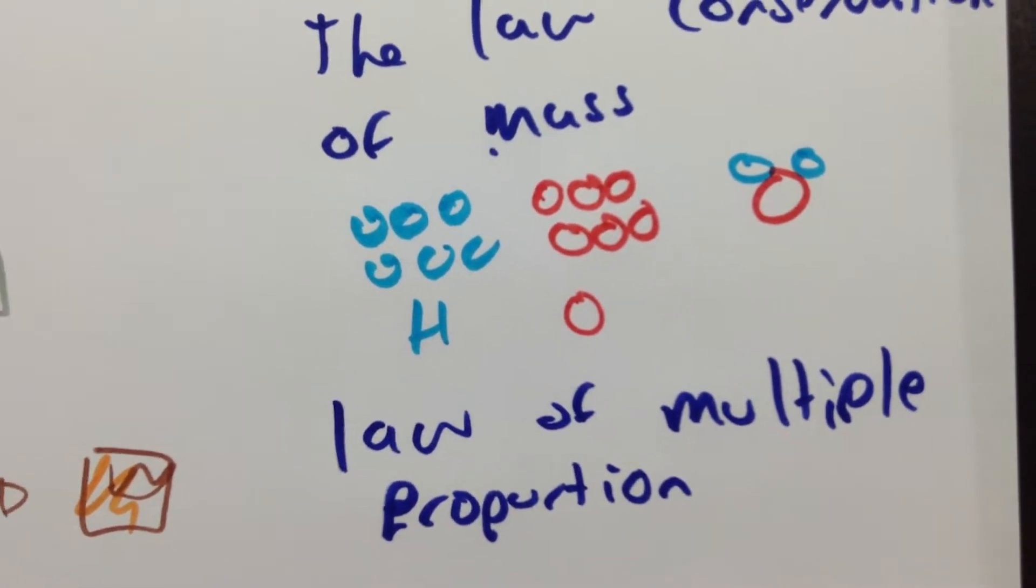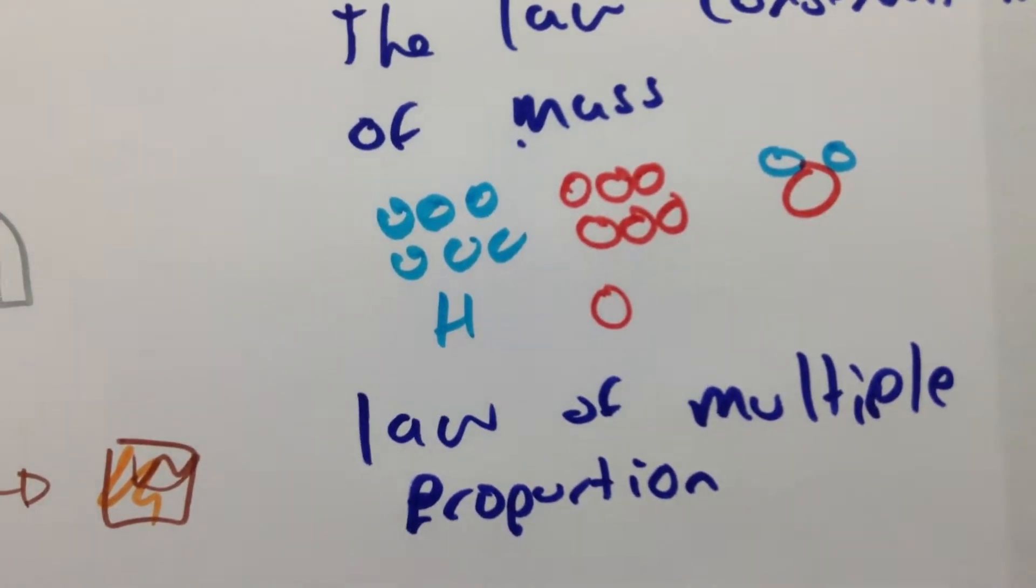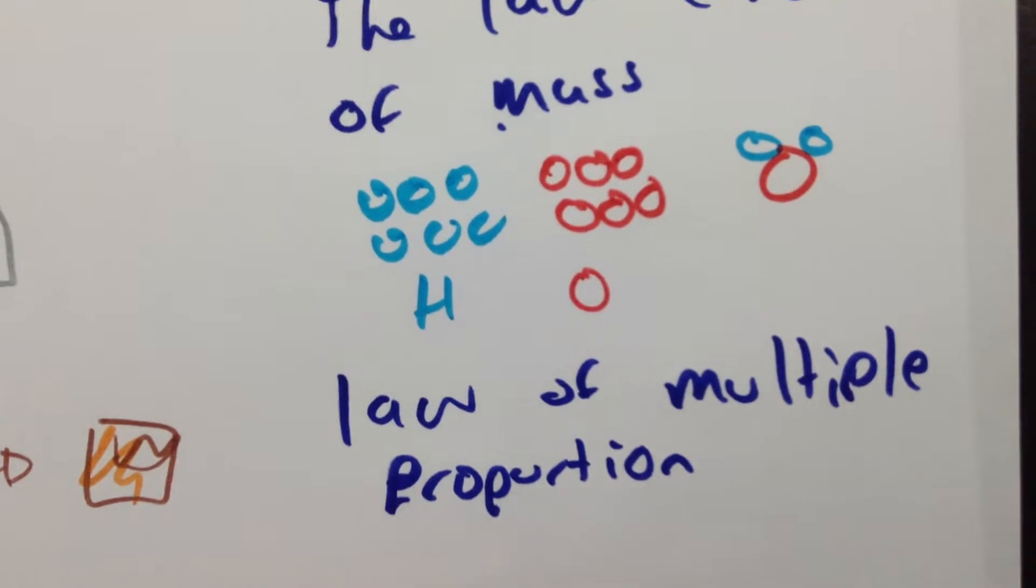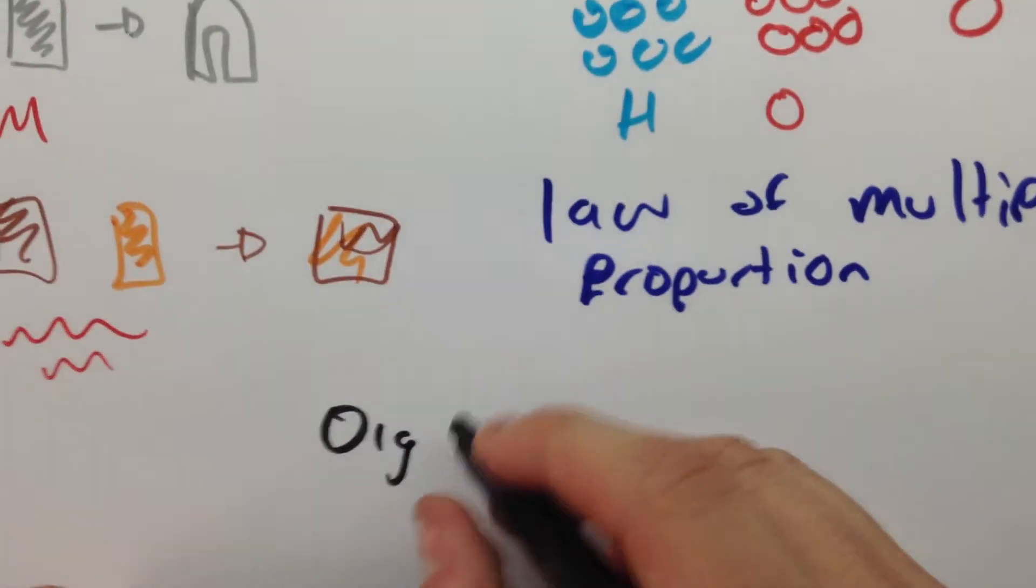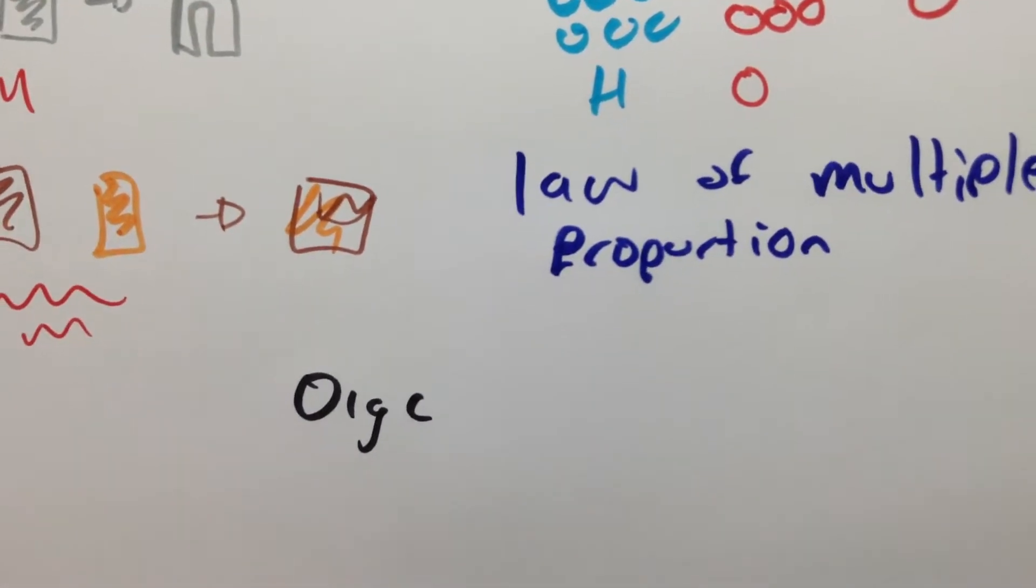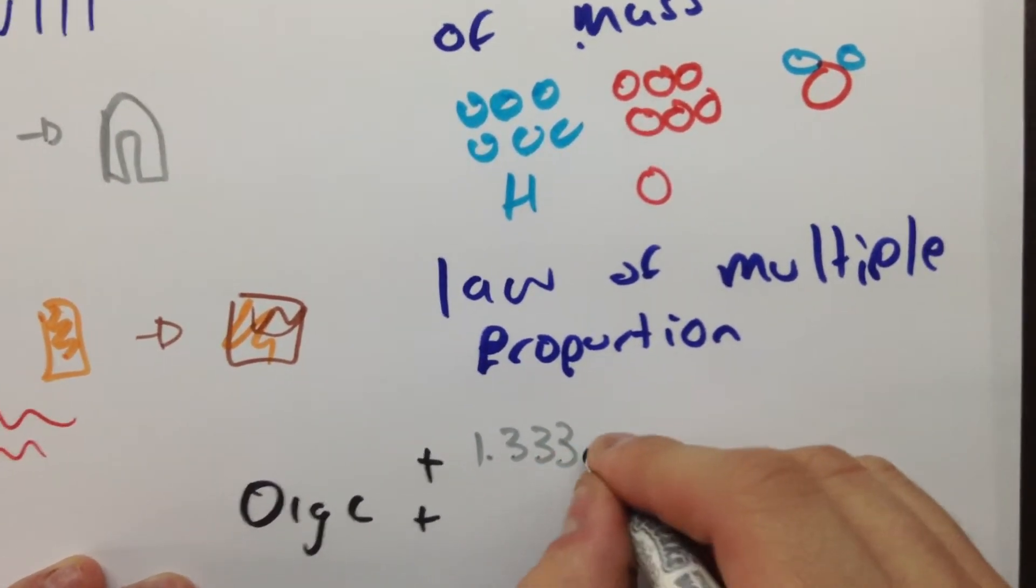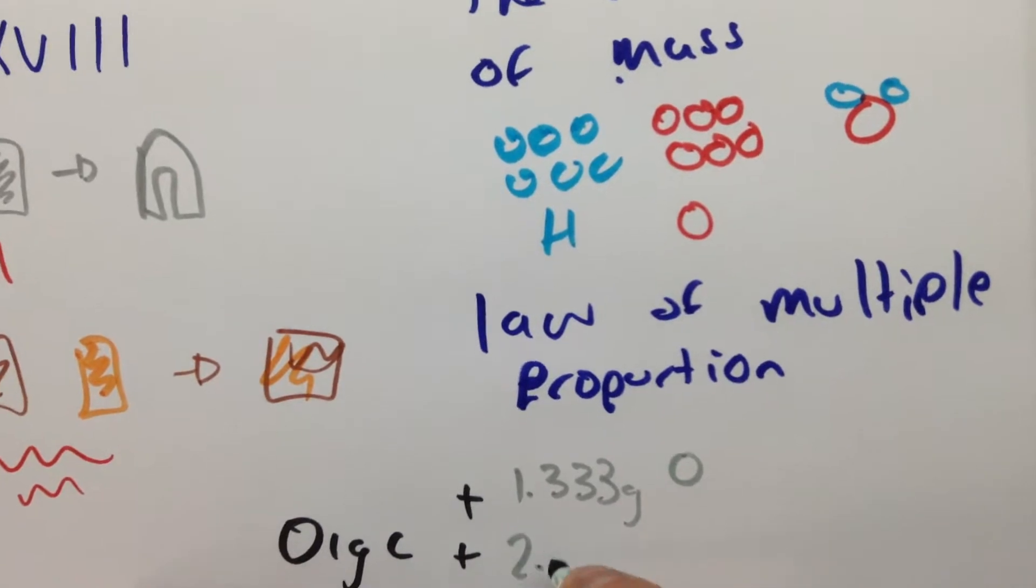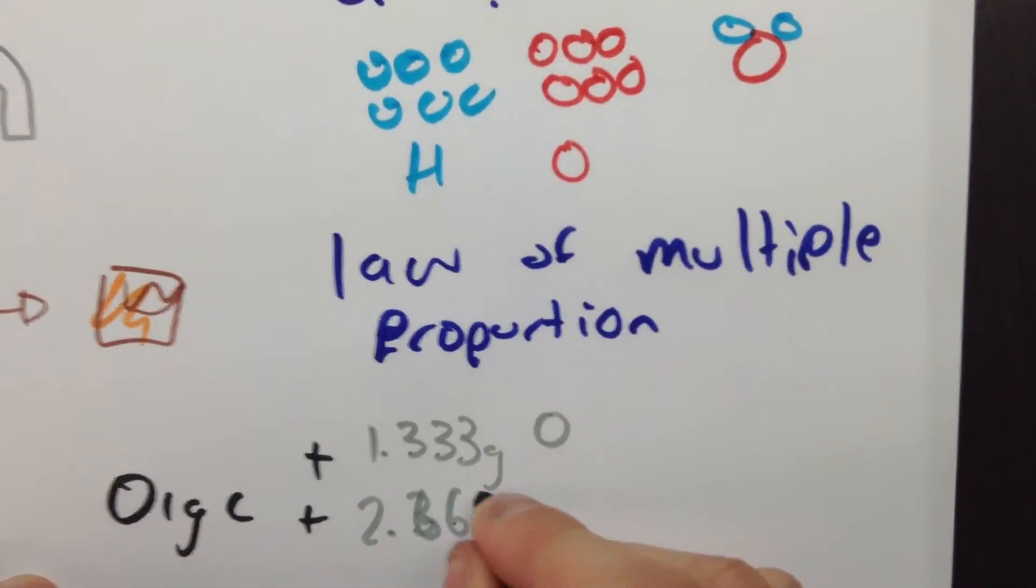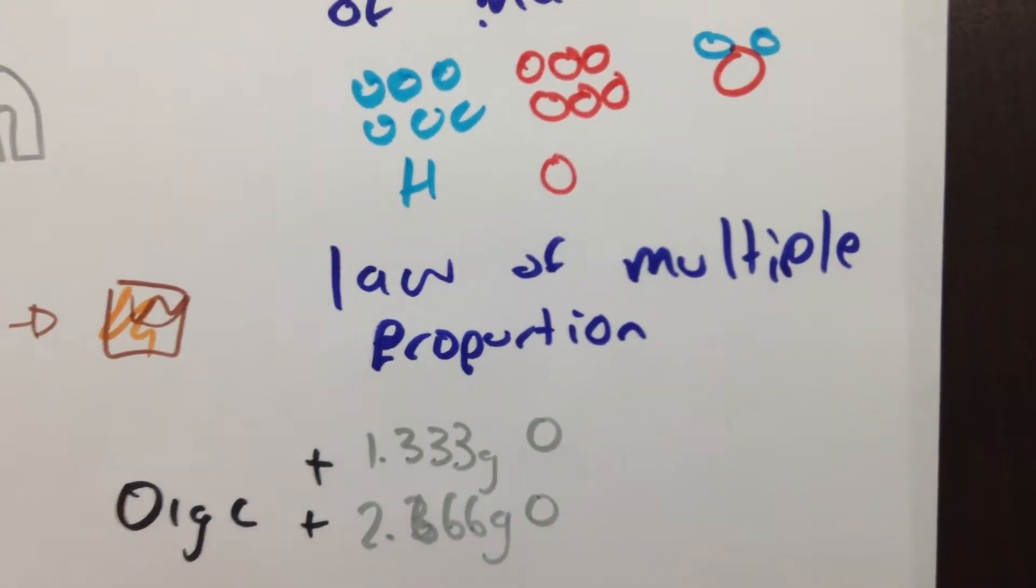This can be explained by saying that if we have one gram of carbon and add both 1.333 grams of oxygen and 2.666 grams of oxygen,